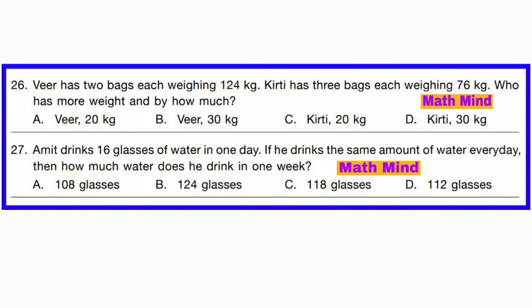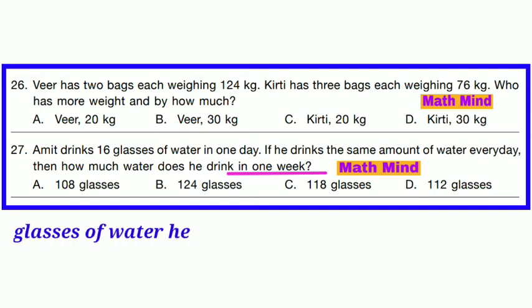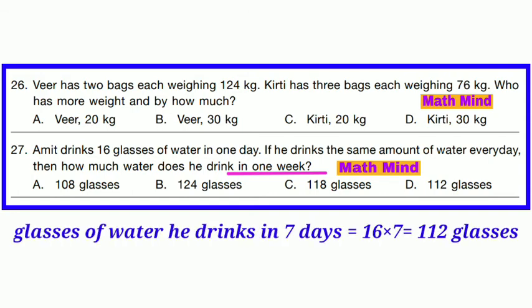Question No. 27: Hamid drinks 16 glasses of water in 1 day. If he drinks the same amount every day, how much water does he drink in 1 week? 1 week = 7 days. So 16 × 7 = 112 glasses. Option D is correct.